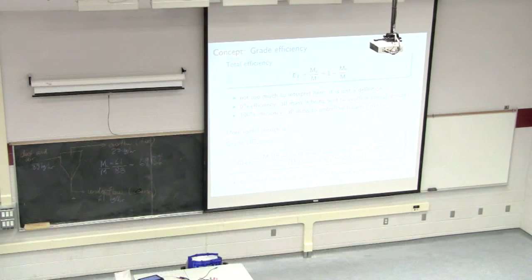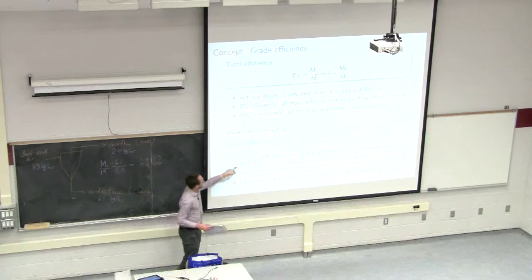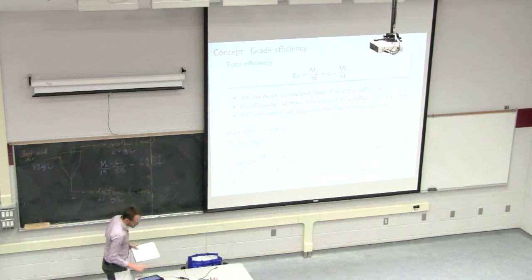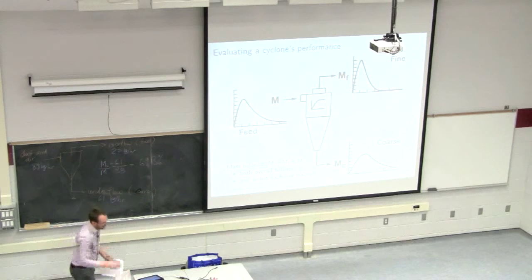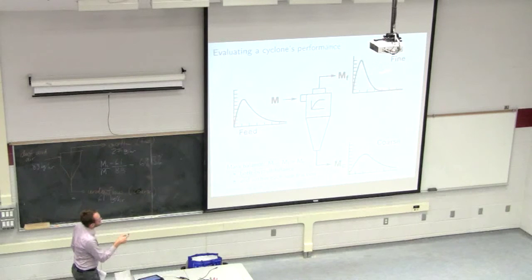Total efficiency is a very crude metric to judge a cyclone. What is more useful is the grade efficiency. We calculate the grade efficiency on a per-particle-size basis — focusing on one size fraction and seeing what happens to it as it goes in, and where that particle size reports in the fines versus in the coarse.